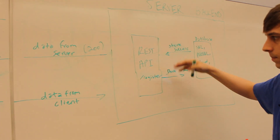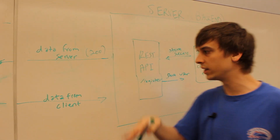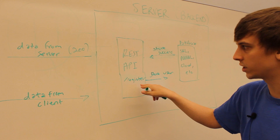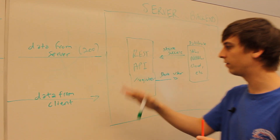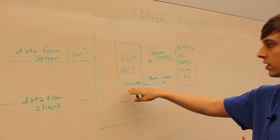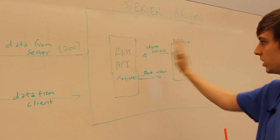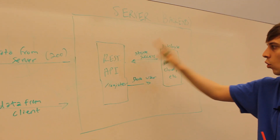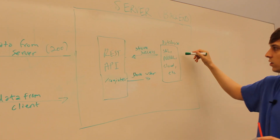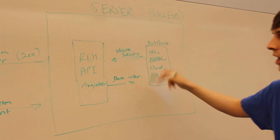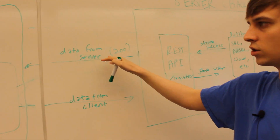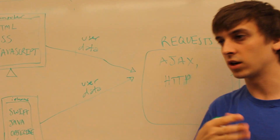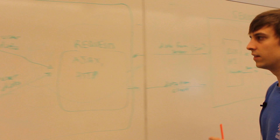Usually you have an API with defined routes you can send requests to based on the URL. Maybe you have a slash-register route defined in your API. You take the username and password, and since it's hooked up to a database — maybe SQL or NoSQL — you store the user in the database. The database returns success, you send a 200 response back, and you display a message to the user like 'your account was successfully created' and log them in.